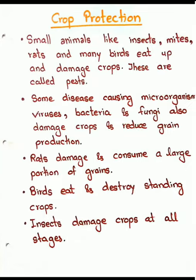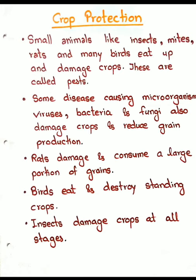Some disease-causing microorganisms — viruses, bacteria and fungi — also damage crops and reduce grain production. Rats damage and consume a large portion of grains. In fact, pests can cause damage to almost 40% of crops. Birds eat and destroy standing crops, and insects damage crops from sowing till harvesting.